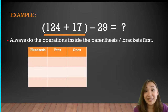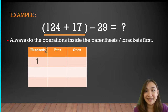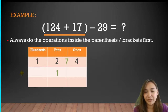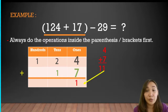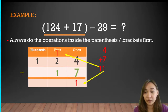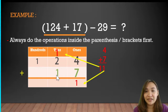Let's arrange the numbers according to their place values. We have 124 and 17. Adding the ones: 4 plus 7 equals 11 — two digits, so we bring down 1 and carry 1 to the tens place. We regroup. Then we add the tens: 1 plus 2 plus 1 equals 4.